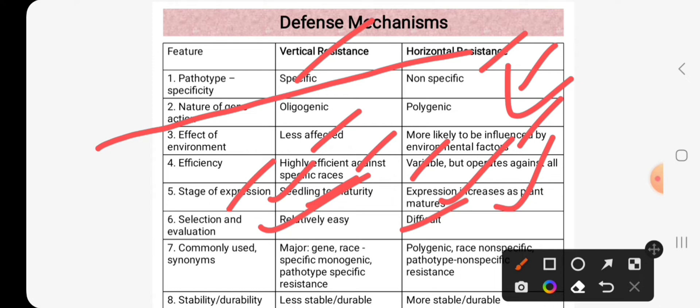Vertical resistance is known as major gene or race specific, monogenic or pathogen pathotype specific resistance, while horizontal resistance is known as polygenic, race non-specific, pathotype non-specific resistance.